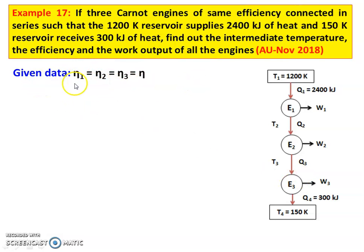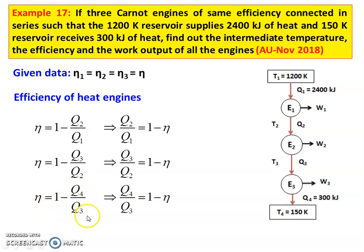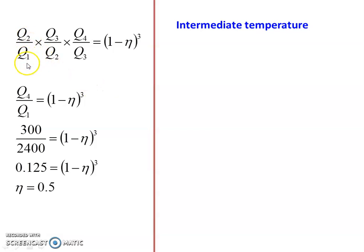The condition is equal efficiency: Eta 1 equal to Eta 2 equal to Eta 3 equal to Eta. For the first engine, Eta equal to 1 minus Q2 by Q1, so Q2 by Q1 equal to 1 minus Eta. For the second engine, Eta equal to 1 minus Q3 by Q2, so Q3 by Q2 equal to 1 minus Eta. For the third engine, Eta equal to 1 minus Q4 by Q3, so Q4 by Q3 equal to 1 minus Eta. Multiplying all three: Q2/Q1 into Q3/Q2 into Q4/Q3 equal to (1 minus Eta) to the power 3. After cancellation, Q4 by Q1 equal to (1 minus Eta) to the power 3. Substituting Q4 equal to 300 and Q1 equal to 2400: 0.125 equal to (1 minus Eta) to the power 3. Solving, Eta equal to 0.5.